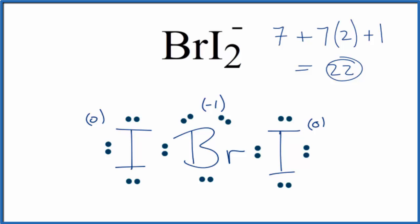Since it is an ion, we need to put brackets around it and put a negative sign outside of the brackets. This is our Lewis structure for BrI2-.